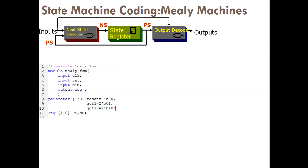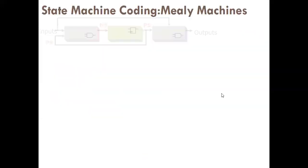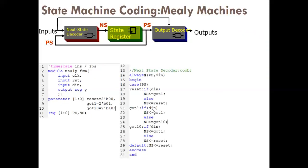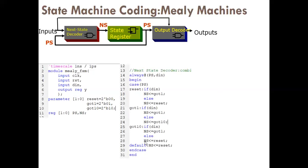When at GOT10 state — if DIN is 1, next state = GOT1 (sequence detected, transition back); else (DIN is 0) next state = RESET. Default: next state = RESET. This completes the next state decoder.